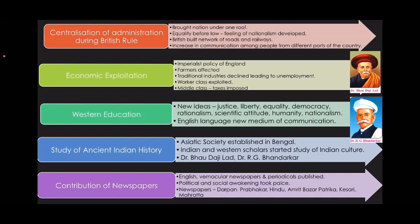Farmers were compelled to cultivate cash crops. There was a burden of land taxes and continuous famines. All this broke down the backbone of Indian agriculture. Traditional industries declined, which led to a rise in unemployment. The capitalists exploited the worker class, and various new taxes were imposed on the middle class.